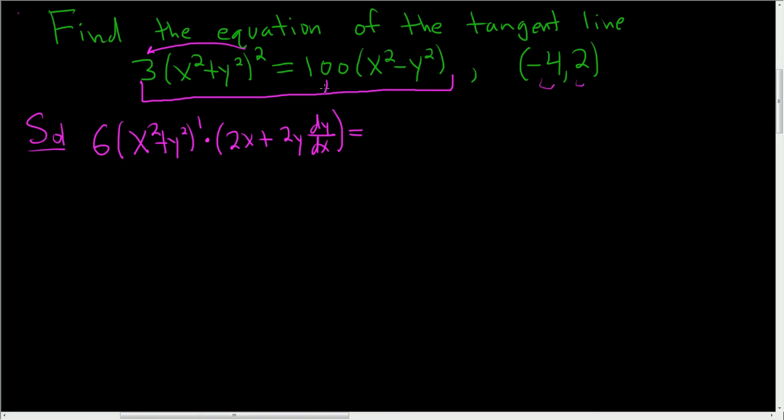Over here on the right-hand side, the 100 is a constant, so it just kind of hangs out. So we have 100, 2x minus 2y dy dx. Let's go over that one more time. We took the derivative of both sides with respect to x. We brought the 2 down, 2 times 3 is 6. Don't touch the inside. And then you subtract 1, so you get 1. Then you multiply by the derivative of the inside. So 2x checks. 2y dy dx checks.